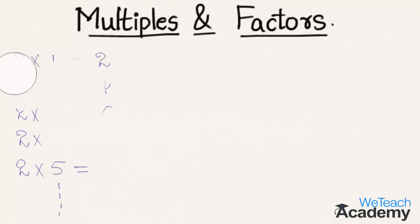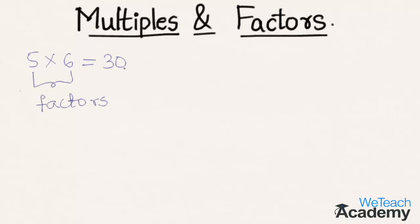Now let me explain this concept with examples. We know that 5 into 6 is equal to 30, and here 5 and 6 are said to be the factors of 30, and 30 is said to be the multiple of 5 and 6.